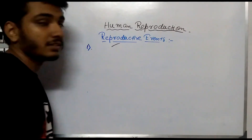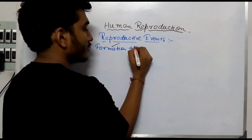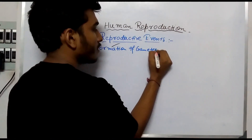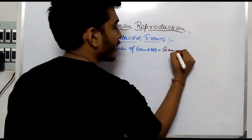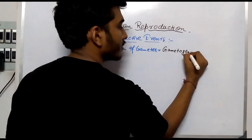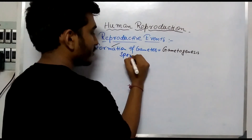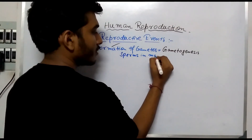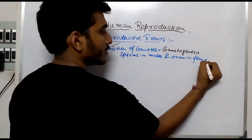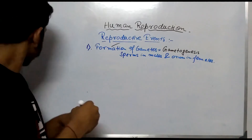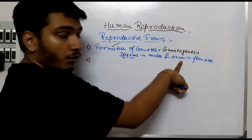The first reproductive event that occurs is the formation of gametes. This process is called gametogenesis — sperms in males and ova in females. Next, point two is the transfer of the male sperm to the ova.